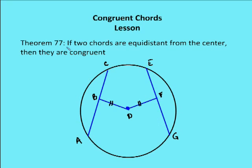The theorem is: if two chords are equidistant from the center, then they are congruent. To show this, I'm going to draw a radius from D to C, and then from D to E. The distance between the chord and the center, based on a prior theorem, is that segment which is a perpendicular bisector of that given chord.